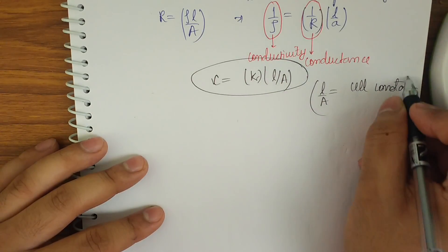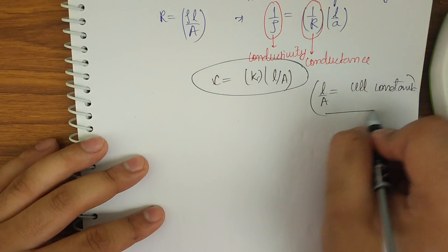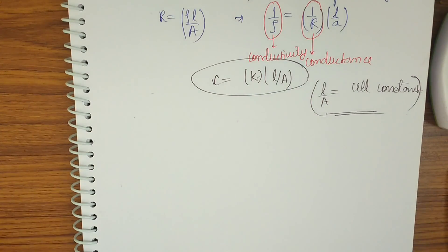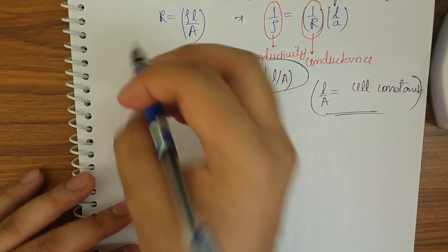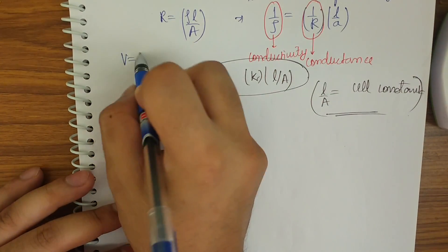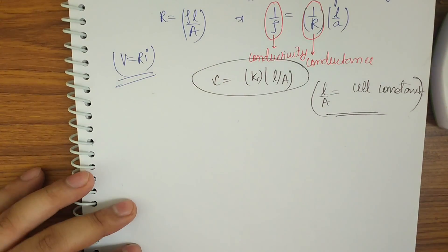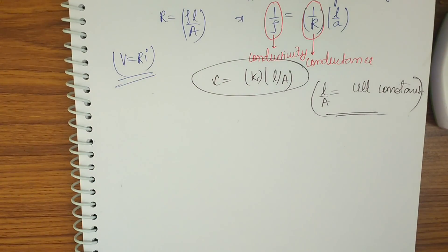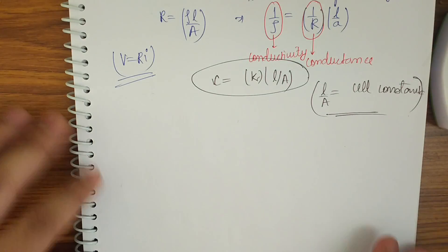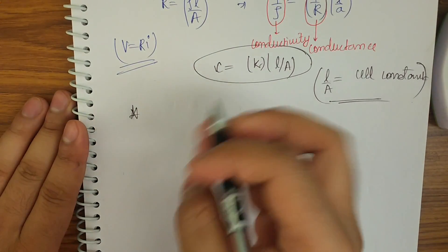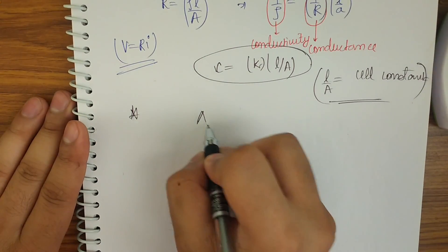This l/A, known as the cell constant, is important for JEE Mains, not for JEE Advanced. Other formulas like V = RI and other basic formulas derived from physics also apply. Now let's move on to molar conductivity.